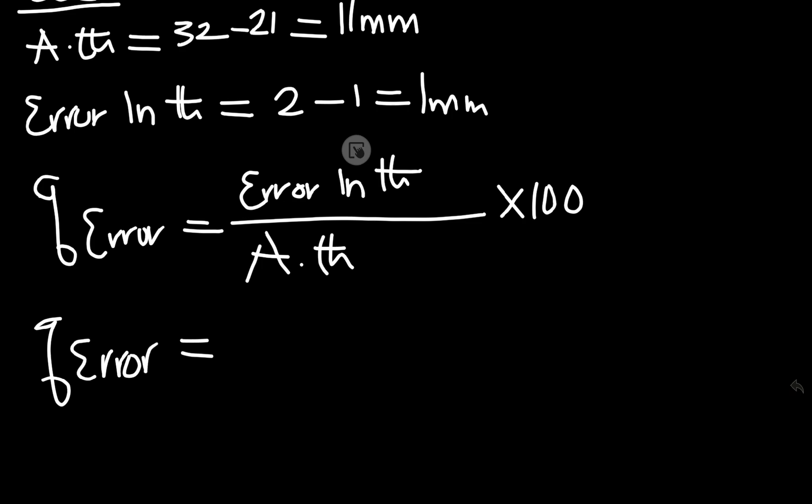Percentage error equals 1 over 11 times 100. This equals 1 times, see, 1 times 100 could give us 100.